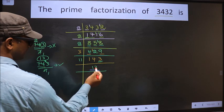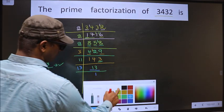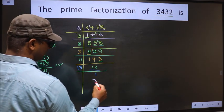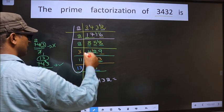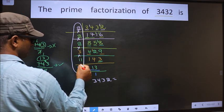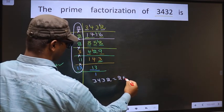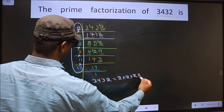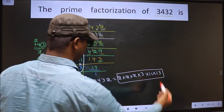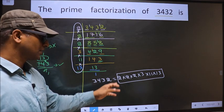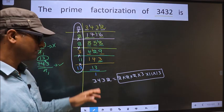Now here we have 13. 13 is a prime number, so we take 13 once — 13 once is 13. We get 1 here. So the prime factorization of 3432 is the product of these numbers: 2 × 2 × 2 × 3 × 11 × 13. This is also called the product of prime numbers of 3432.